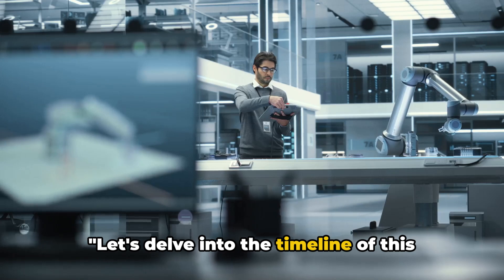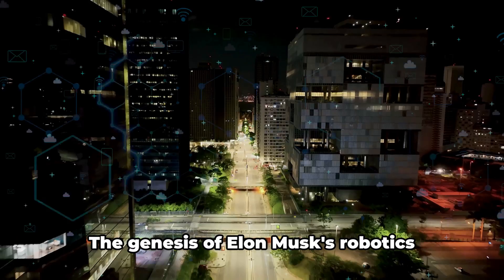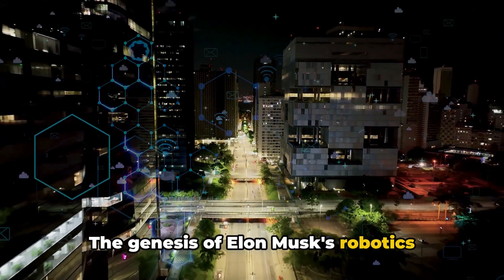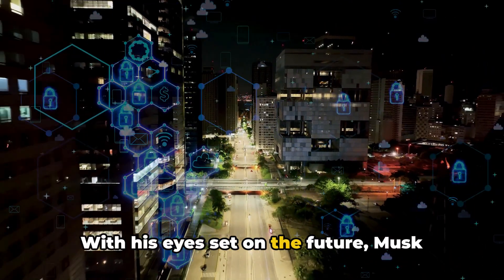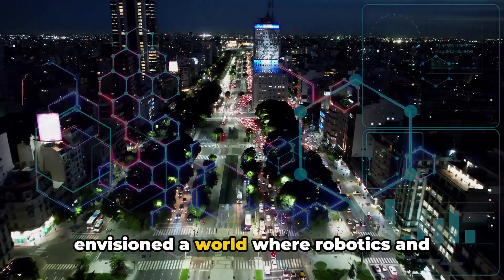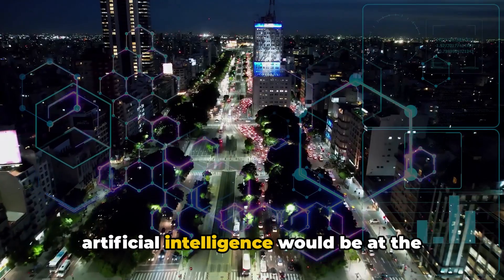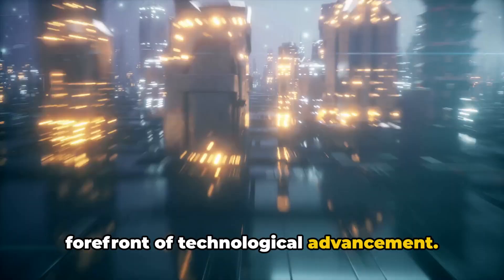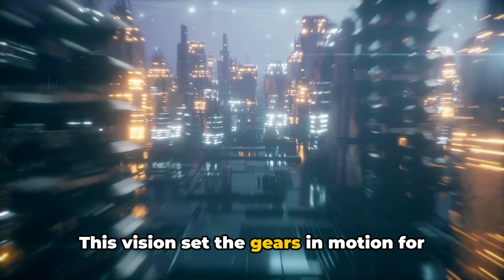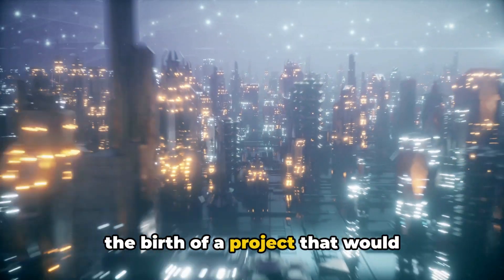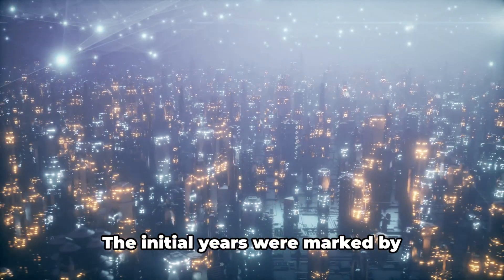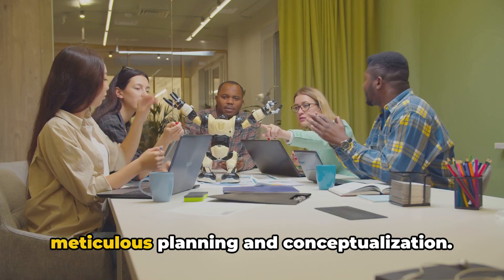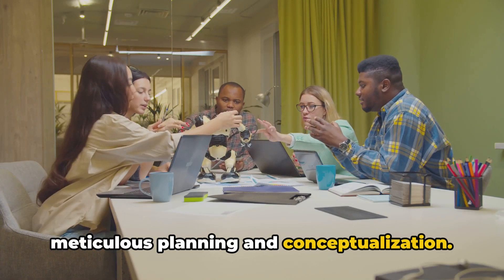Let's delve into the timeline of this enigmatic project. The genesis of Elon Musk's robotics project dates back to the early 2010s. With his eyes set on the future, Musk envisioned a world where robotics and artificial intelligence would be at the forefront of technological advancement. This vision set the gears in motion for the birth of a project that would eventually redefine our understanding of robotics.